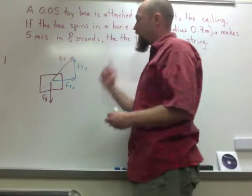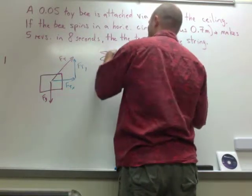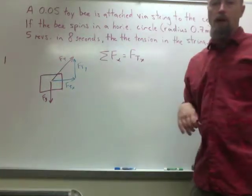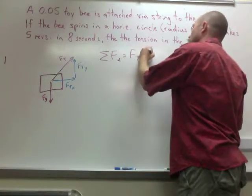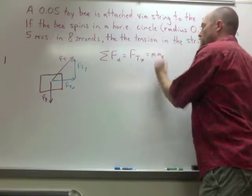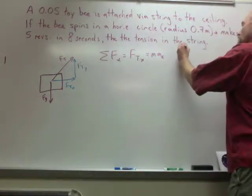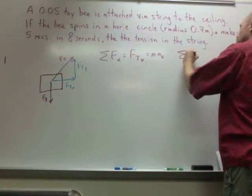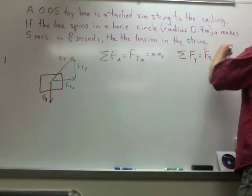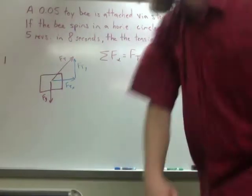If we do that in the X direction, we are going to get the sum of the forces in the X direction equals, well, the only force acting is just FTX. Remember, if it's moving in a circle, that's equal to MA. But remember, the A is a special A. It's the centripetal acceleration, meaning towards the middle. So, FTX equals MAC. For the other side, it's going to be FTY minus FG, and that's going to be equal to zero, because it's not accelerating up or down. It's only accelerating in the horizontal direction. So, there's our two things.